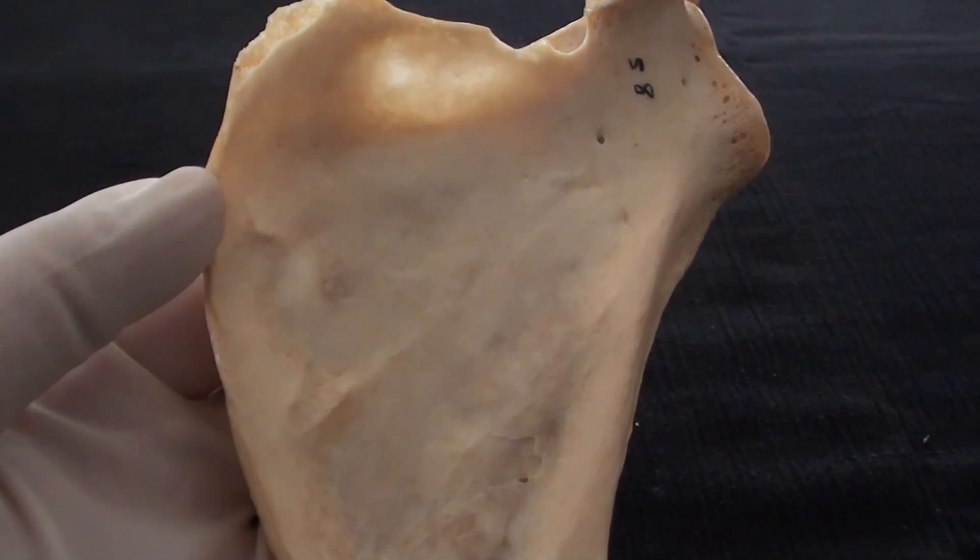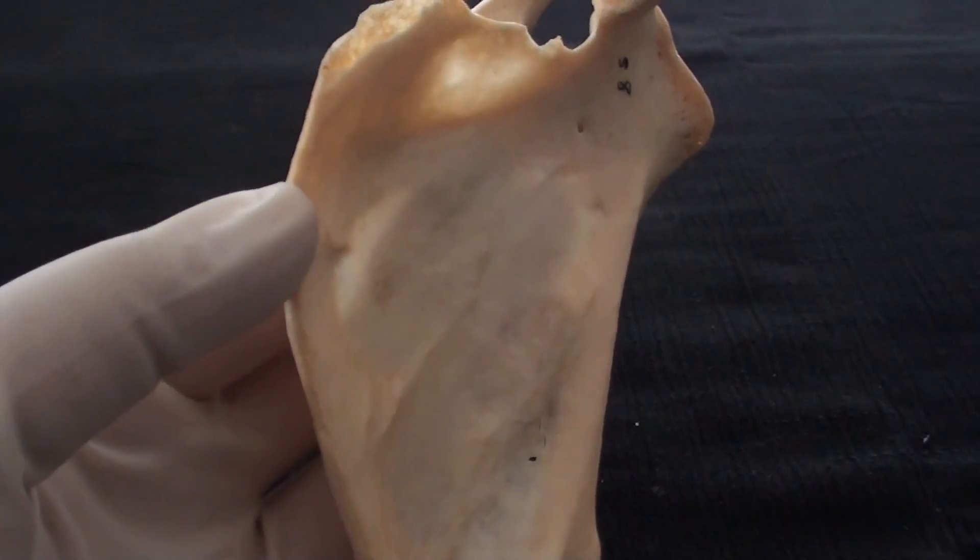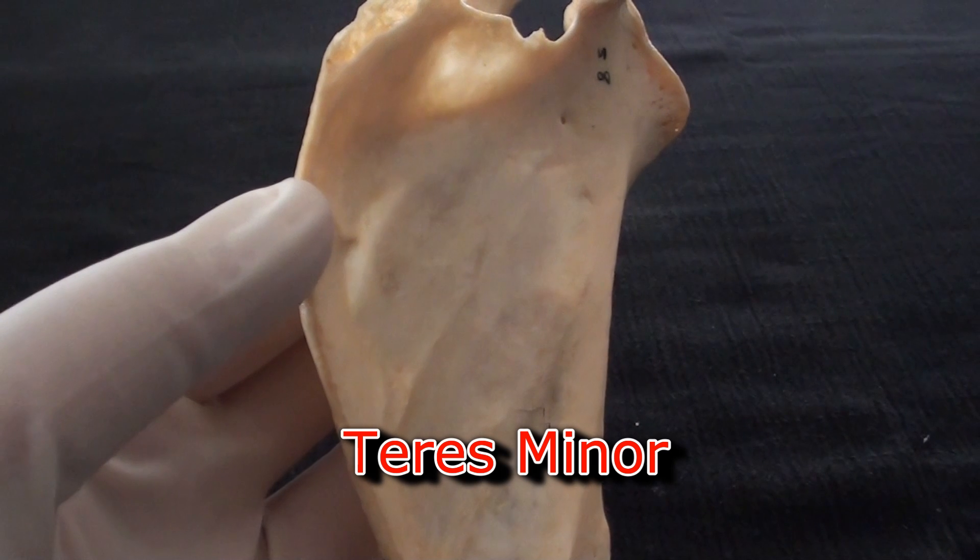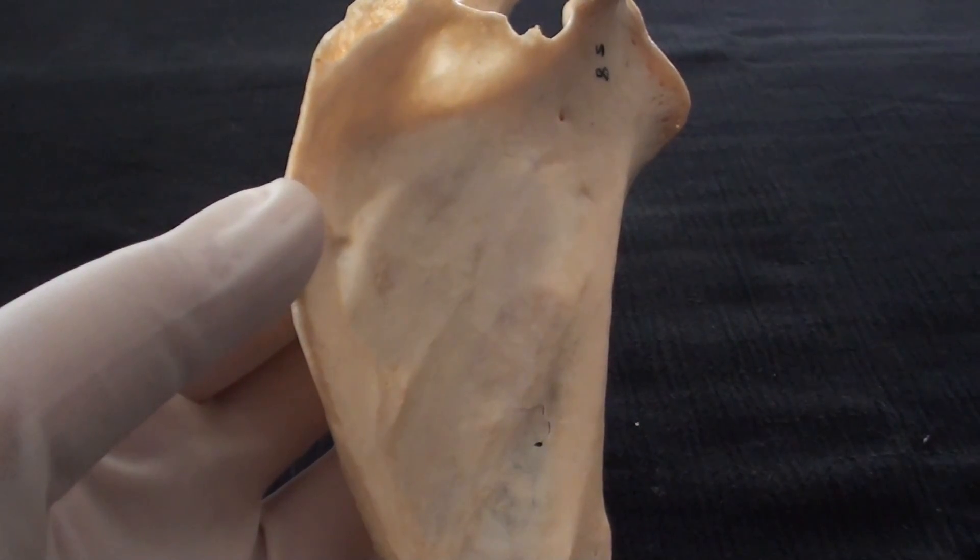Supraspinatus, infraspinatus and the subscapular muscle are joined by another muscle the teres minor and they form rotator cuff around the glenohumeral joint.